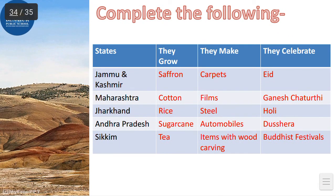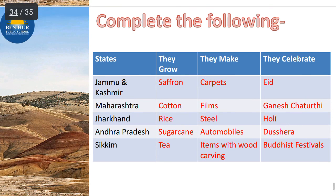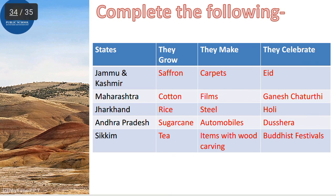Next, complete the table. Some states are given and you have to write what is grown there, what they make, and what they celebrate. In Jammu Kashmir, they grow saffron, they make carpets, and they celebrate Eid. In Maharashtra, they grow cotton, they make films, and they celebrate Ganesh Chaturthi.